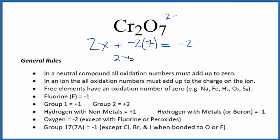So we'd have 2x minus 14 equals minus 2. We could add 14 to both sides. Then we'd have 2x equals 14 plus minus 2 gives us 12. Divide both sides by 2.